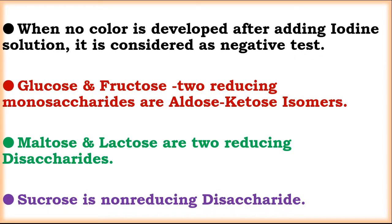When the color is developed after adding iodine solution, it is considered a negative test. Add 2 drops of iodine solution; when the color remains, it is a negative test. In the negative test, glucose, fructose, maltose, lactose, and sucrose do not respond in this test.